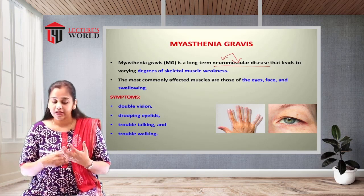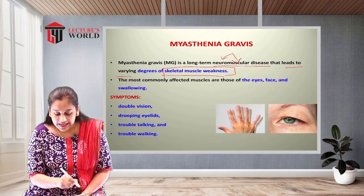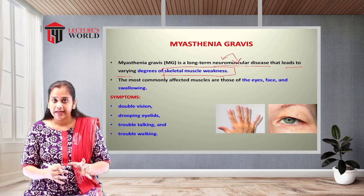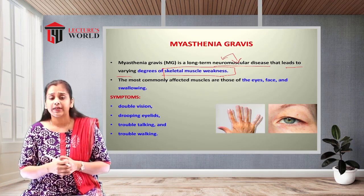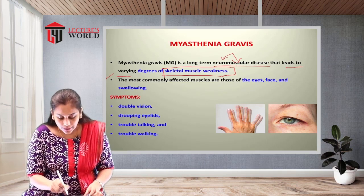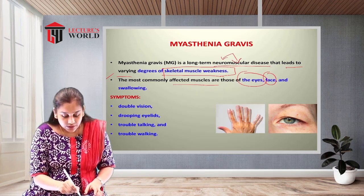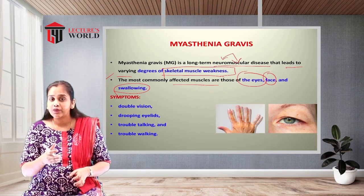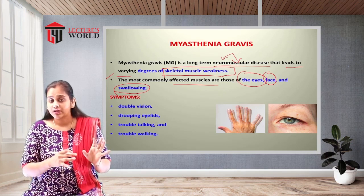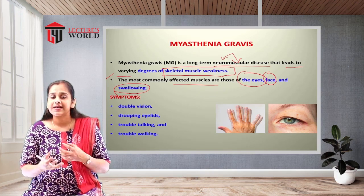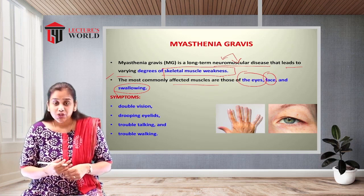Myasthenia gravis leads to varying degrees of skeletal muscle weakness. Because of the skeletal muscle weakness, neuromuscular problems arise. The most commonly affected muscles in myasthenia gravis are those related to the eye, face, and swallowing — the muscles associated with those structures become weaker.